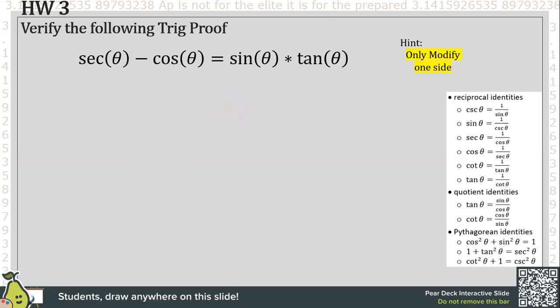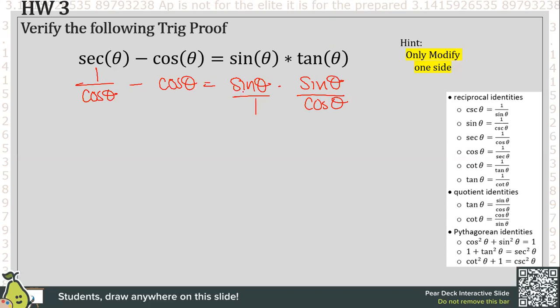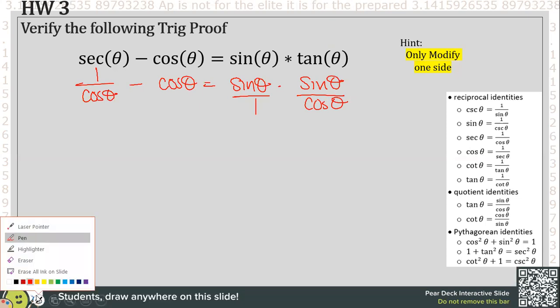Let's do one more: secant theta minus cosine theta equals sine times tangent. This one made us struggle — both sides look really good and it's hard to know which way to attempt. But no matter which side you choose, you should be able to simplify both to equal the same term. By simplifying into sines and cosines: one over cosine theta minus cosine theta equals sine theta times sine theta over cosine theta. The popular option in class was the left-hand side, but the right-hand side still works.